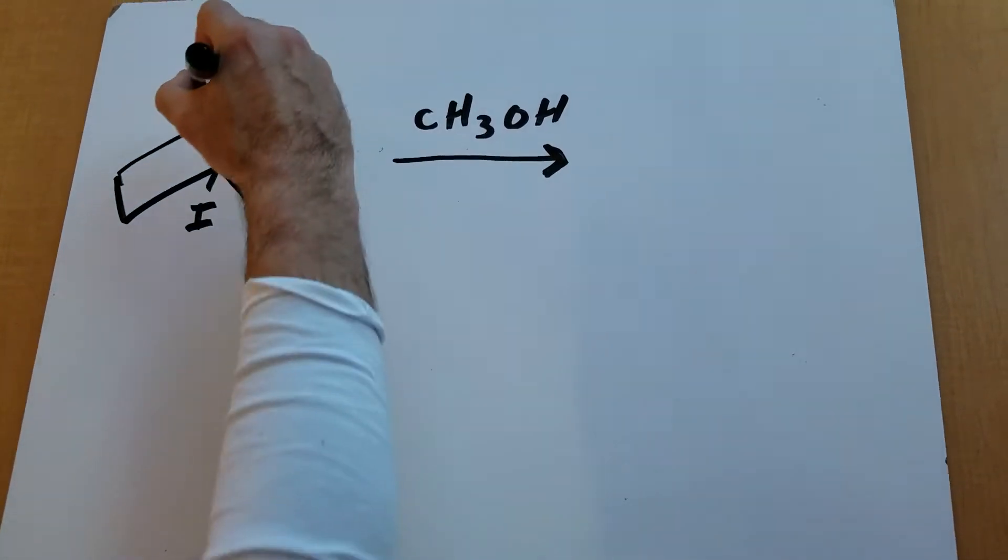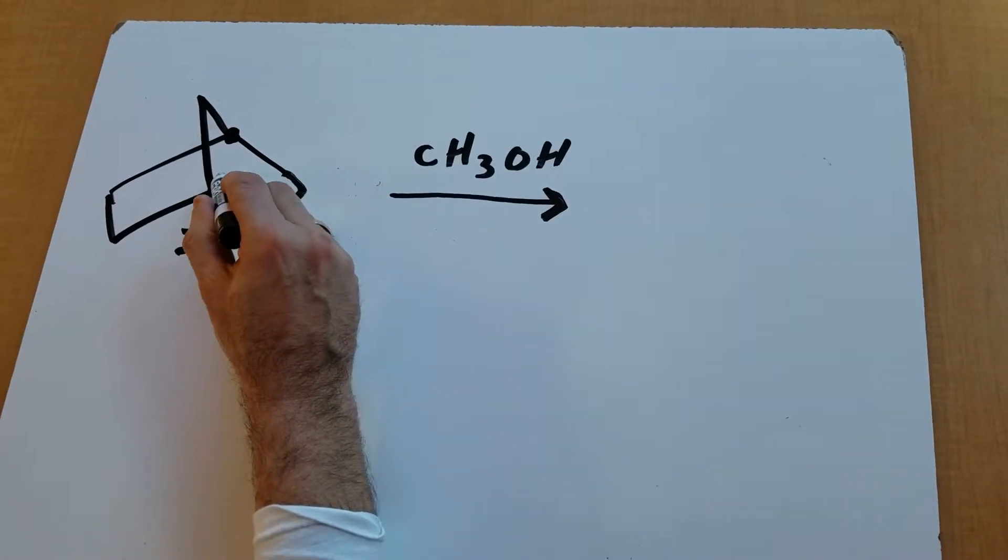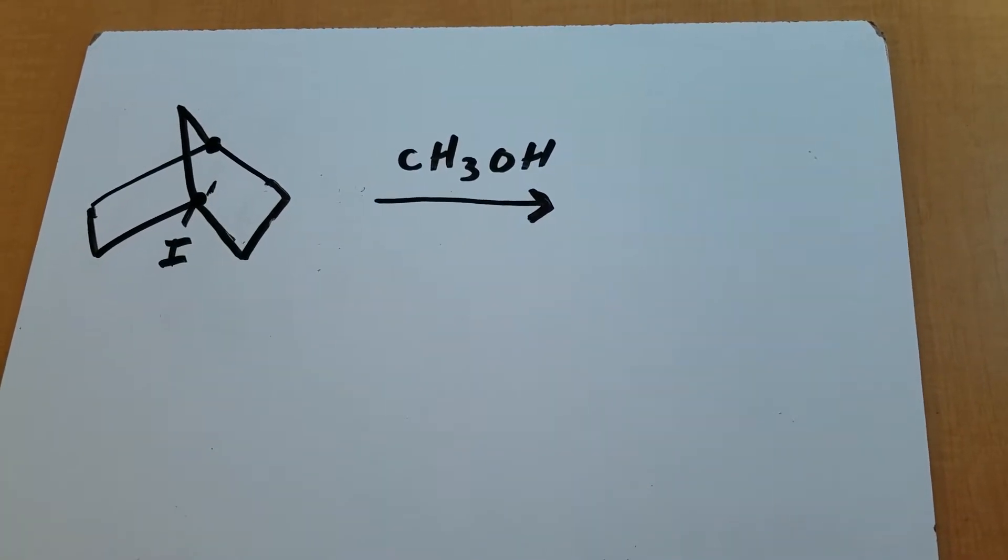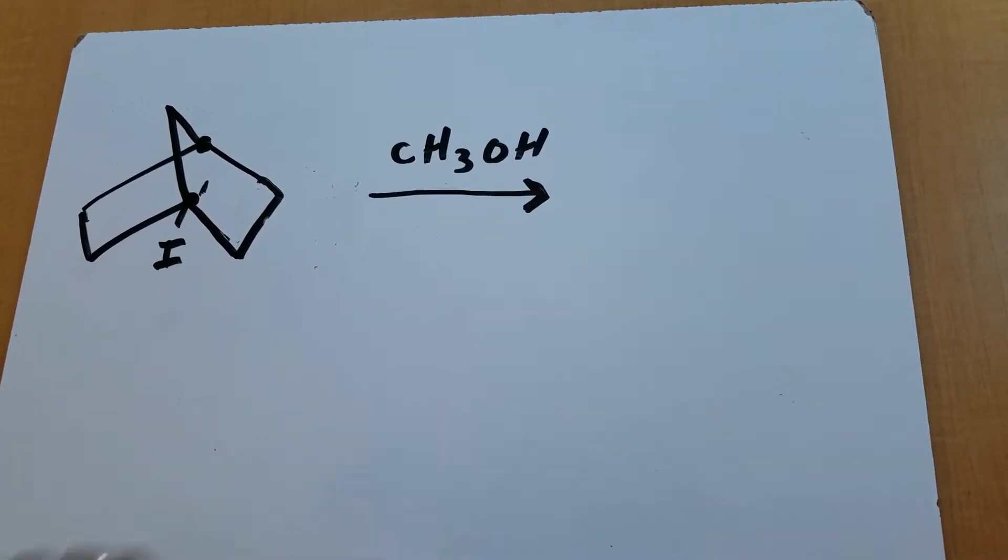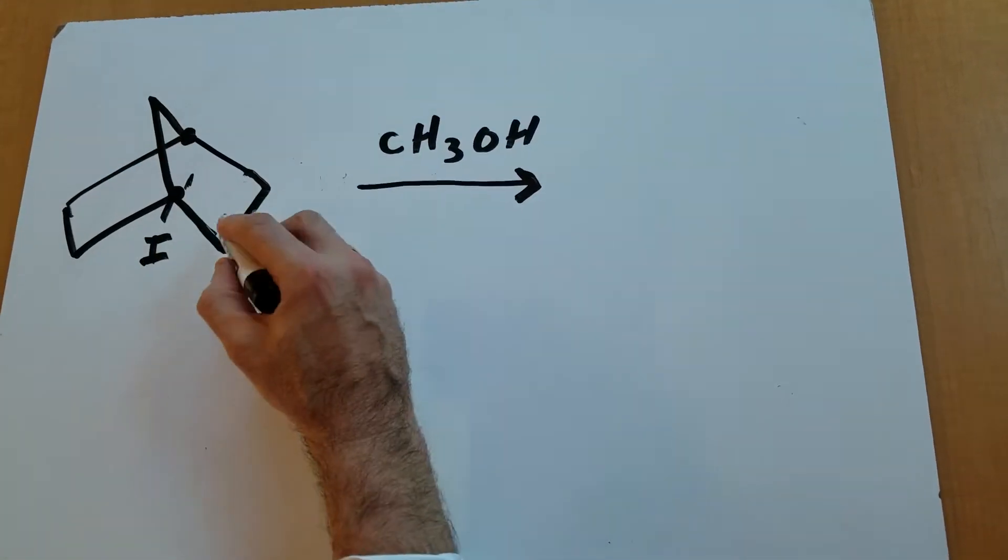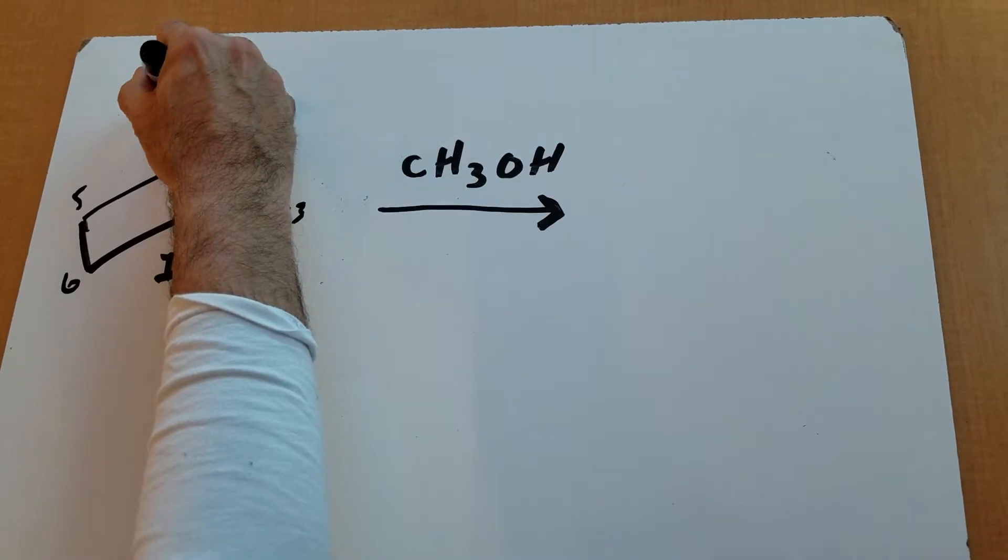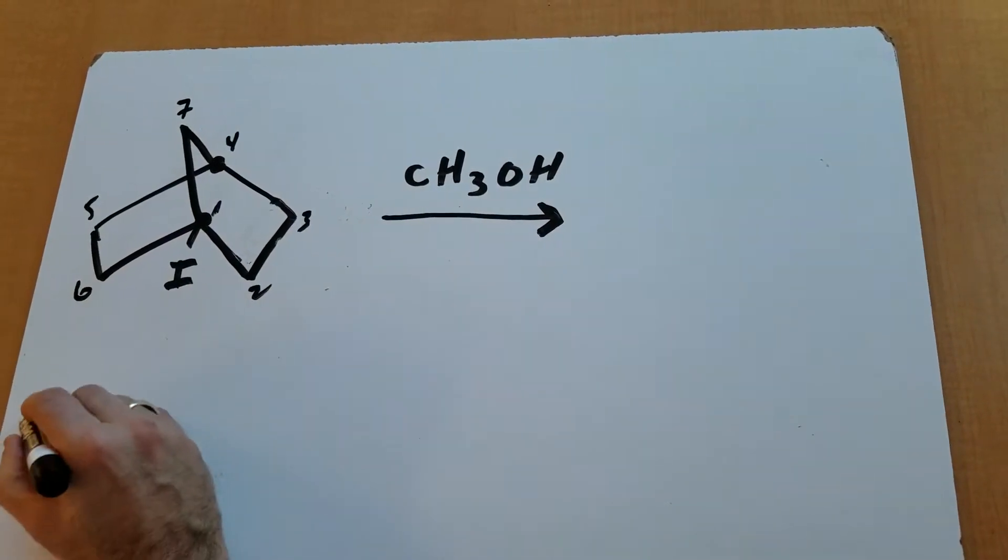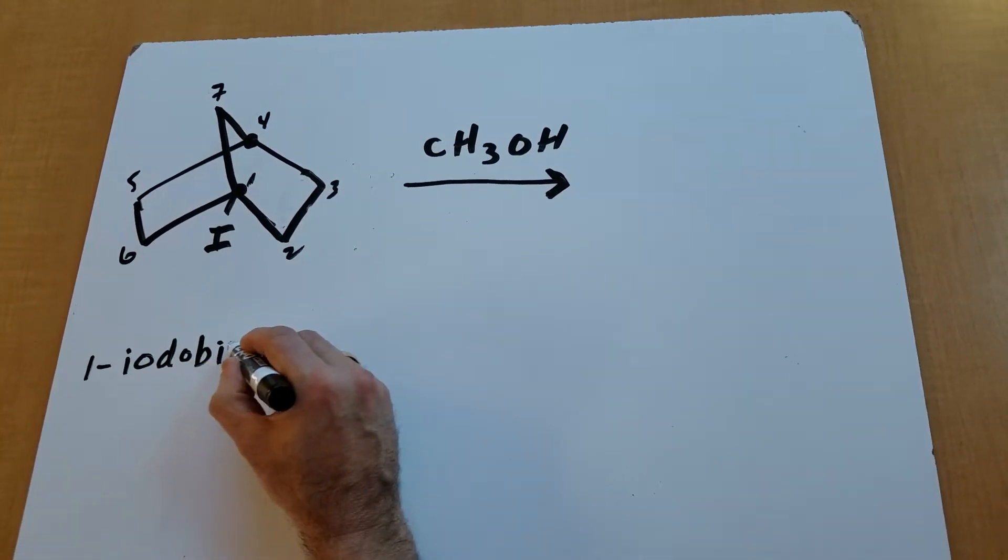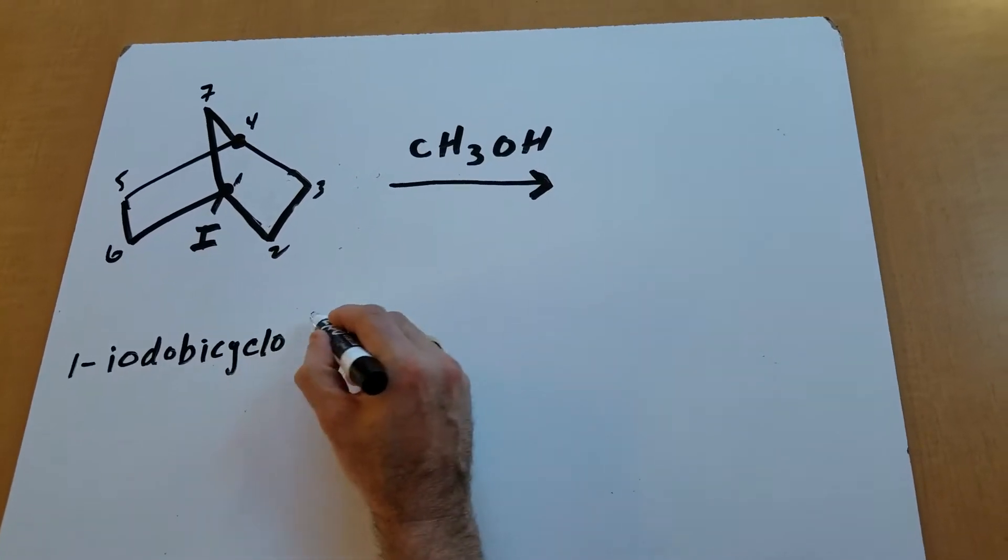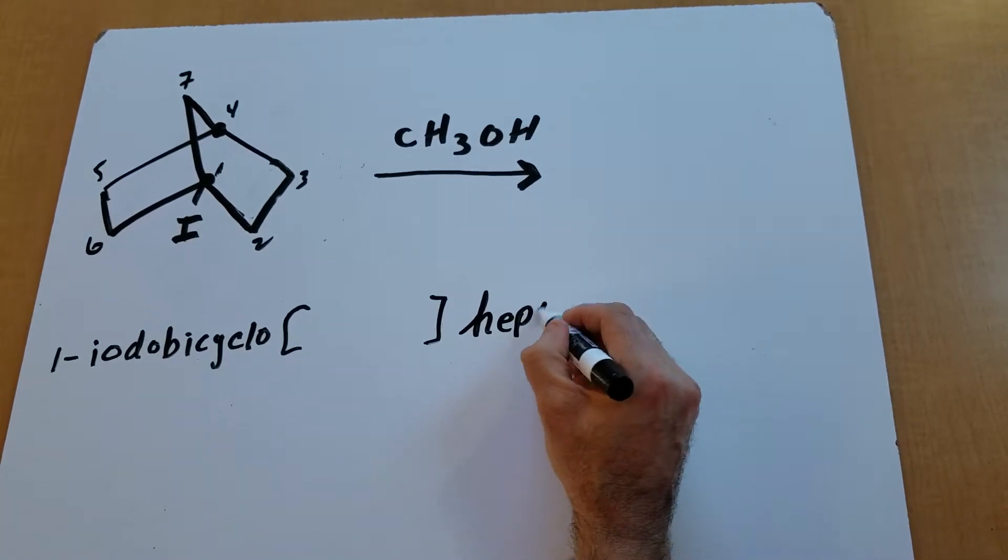This is called a bicyclo compound. So the first thing I'm going to do is I'm going to put two dots in the two bridgehead carbons. And I'm going to call this first bridgehead number one. And I'm going to work myself back to the other bridgehead carbon by the longest path. So if you go this way or this way, they would both be equidistant. So this is good enough. This is four, five, six, and seven. So I would name this compound one iodo. And then I would write the word bicyclo brackets. I'll tell you what to put in the brackets in a second. Heptane because it's seven carbons.